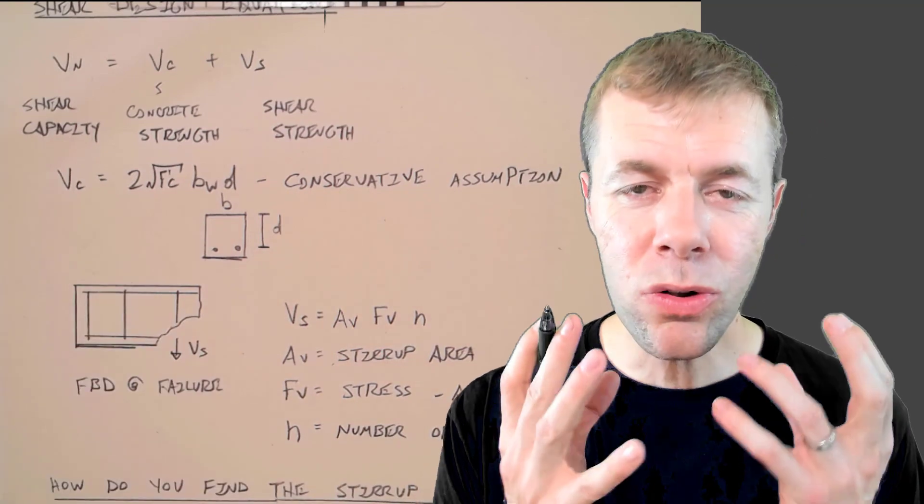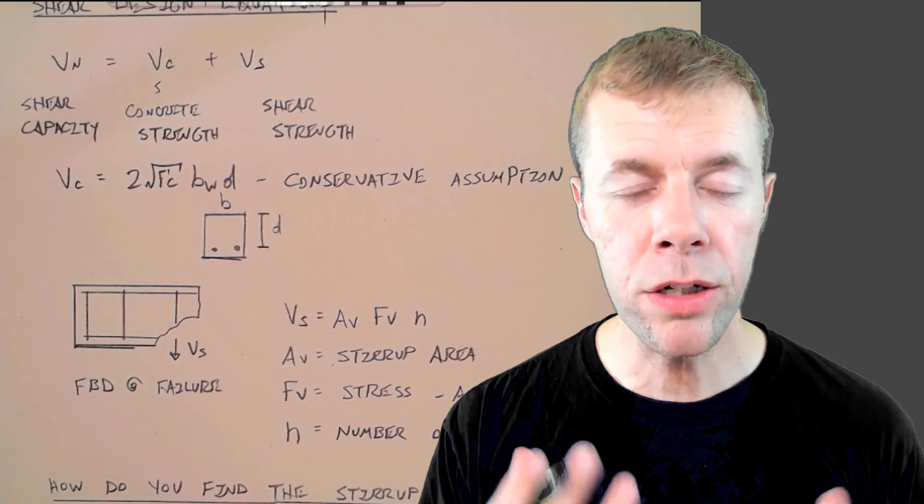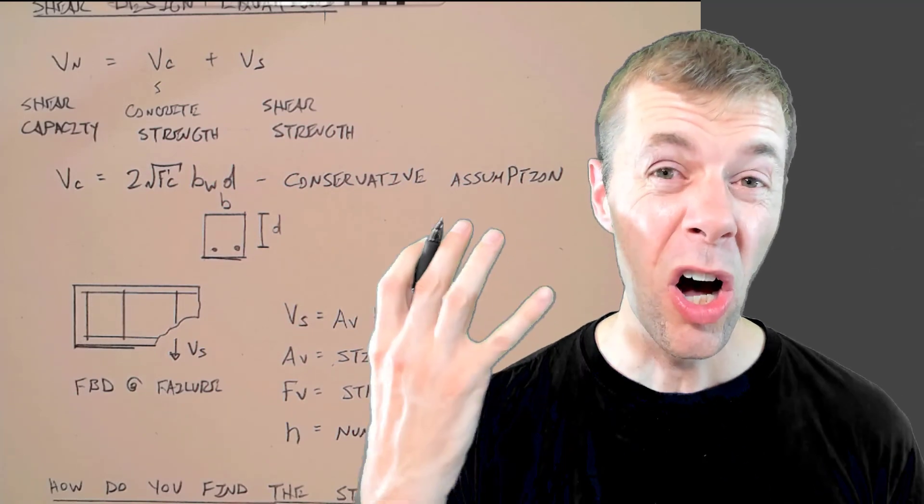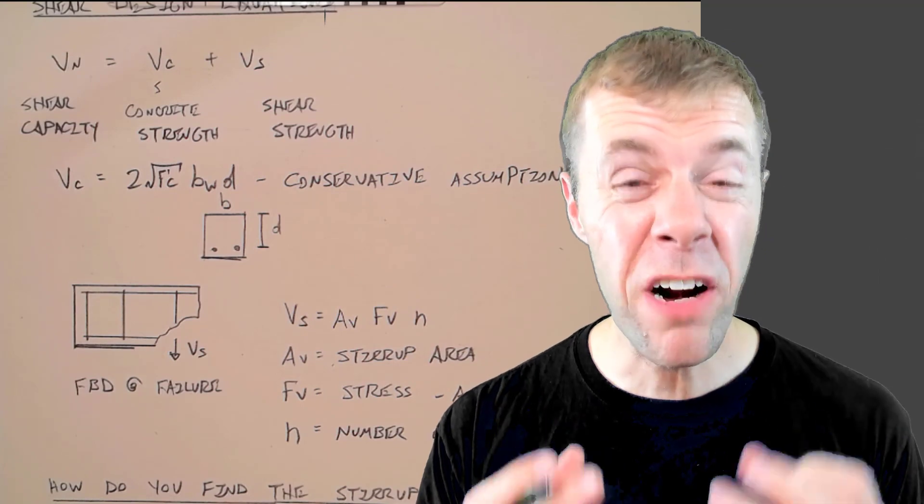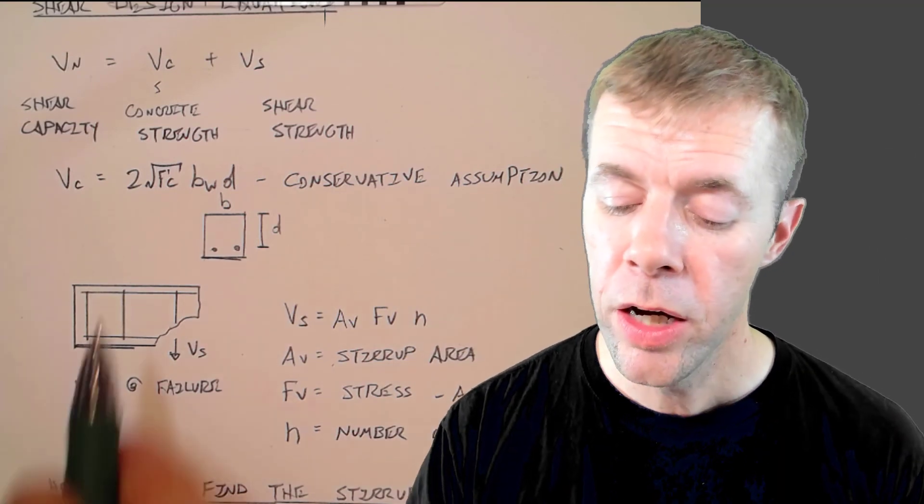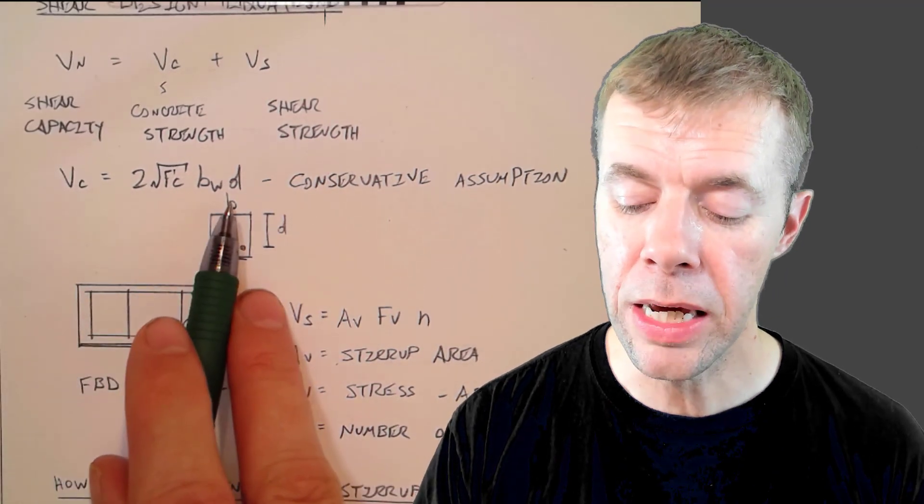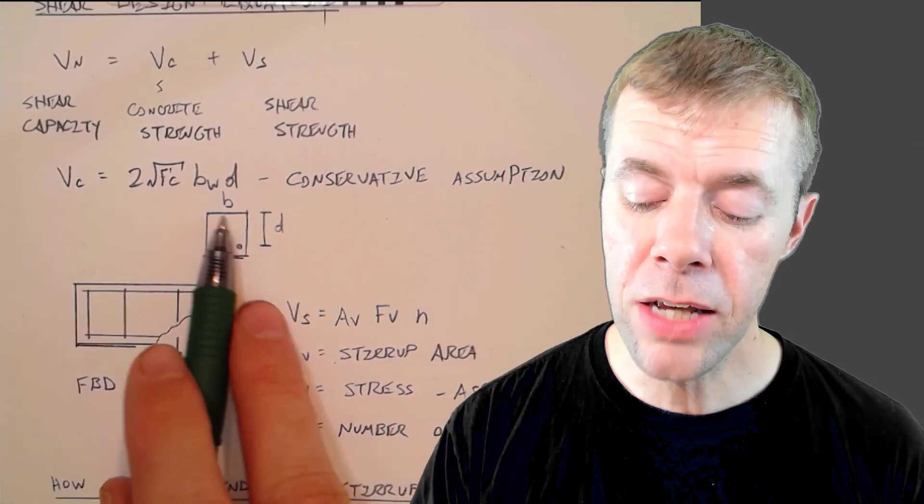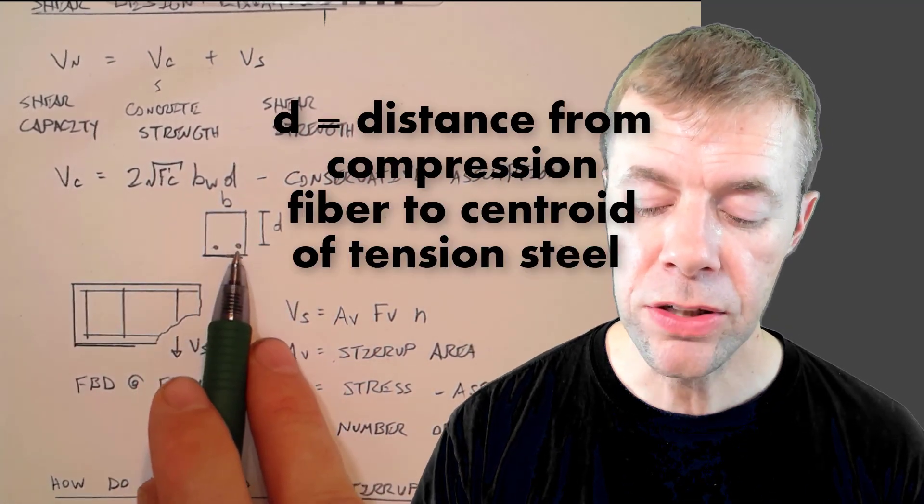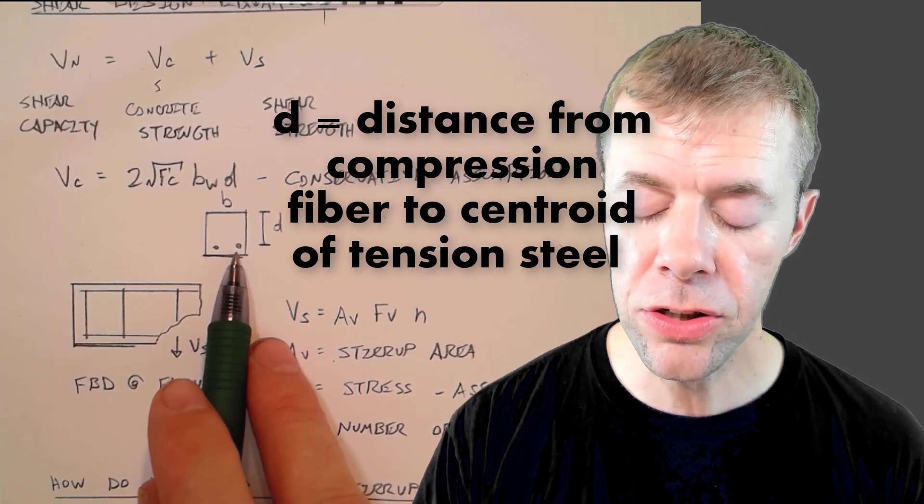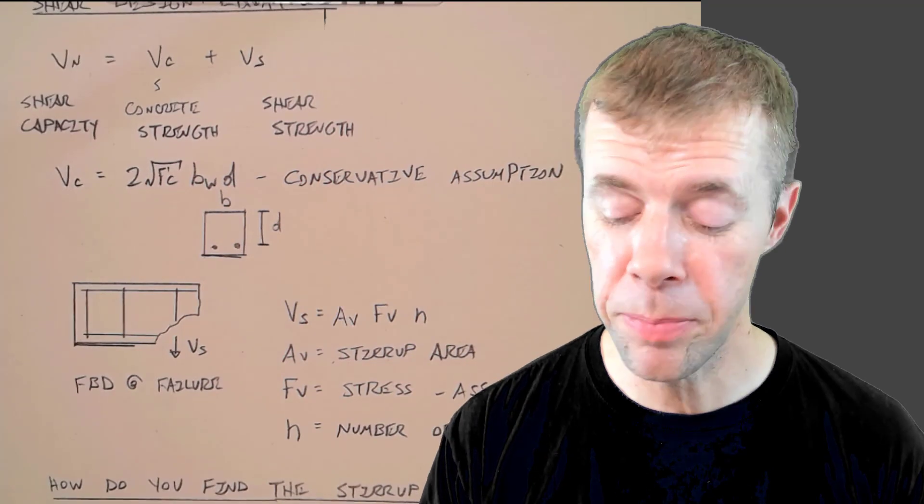V sub C, now there's lots of equations in the building code. There's lots of equations that have been derived to try to determine the contribution of the concrete to the shear strength. This is a very simple one, but a very widely used one, so let's go with it. 2 times the square root of F prime C times BWD. It's very conservative. B is the width of the beam. D is this distance from the compression fiber to the centroid of the tension steel. Now, this is an empirical equation.